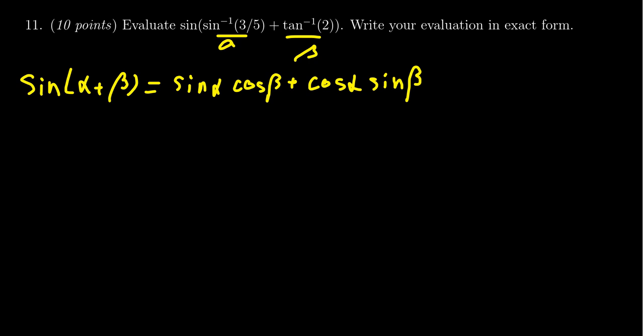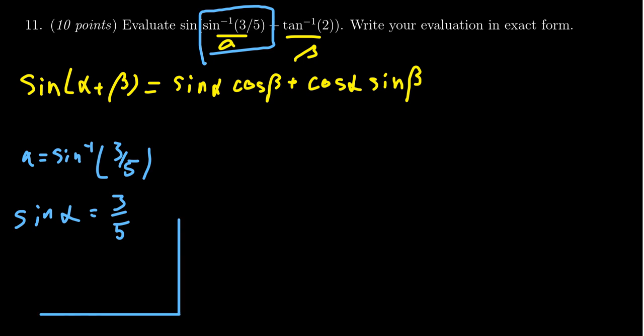Starting with sine inverse of three-fifths, starting with alpha, notice we've said that alpha equals sine inverse of three-fifths. That means to us that sine of alpha is equal to three-fifths. So we're going to construct a triangle associated to exactly that value. We have a right triangle for which then we identify that alpha is the angle we're considering. Sine is of course the opposite over hypotenuse.